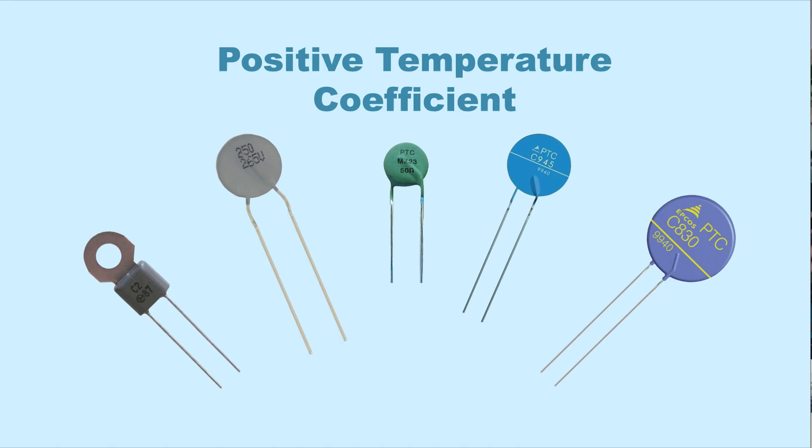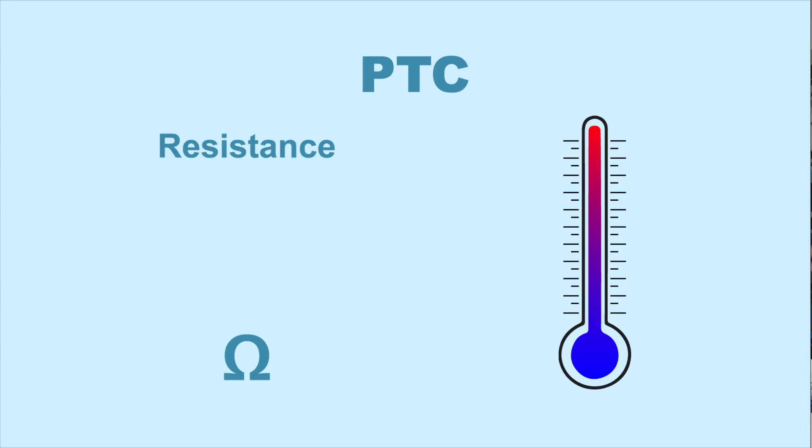Positive temperature coefficient, or PTC thermistors, have a resistive response that aligns with the temperature change. As the temperature increases, the resistance also increases. As the temperature decreases, so does the resistance.